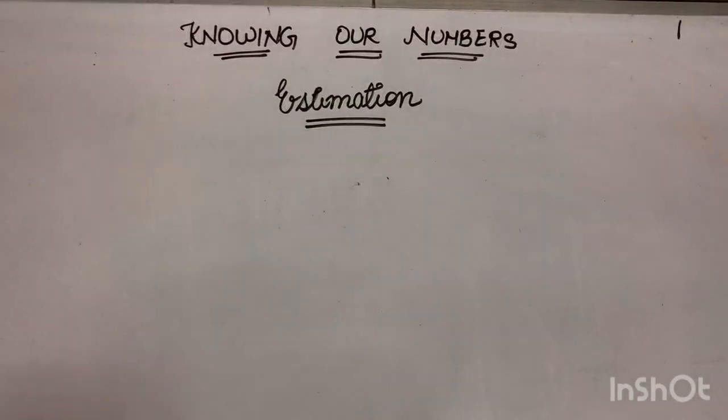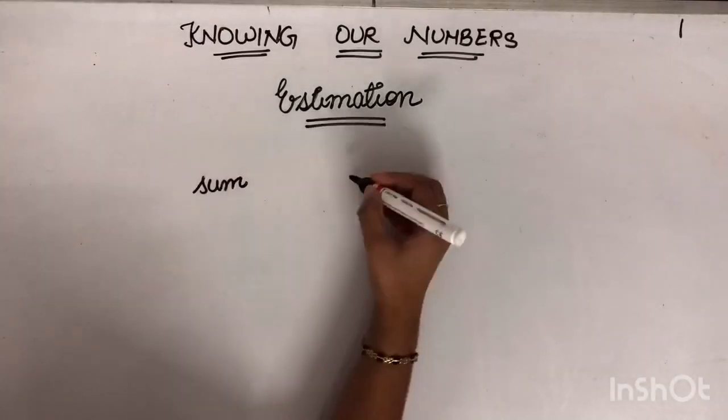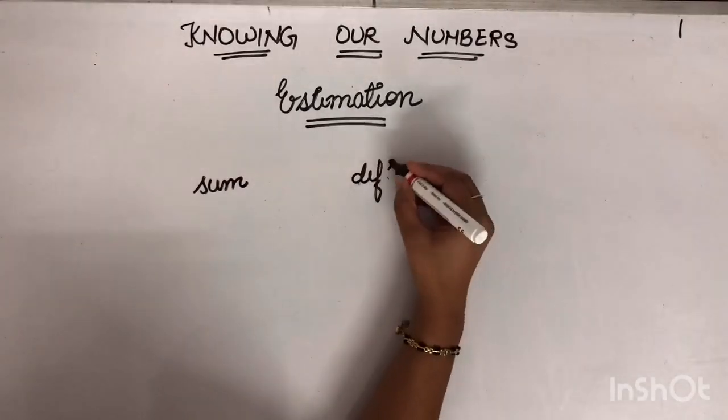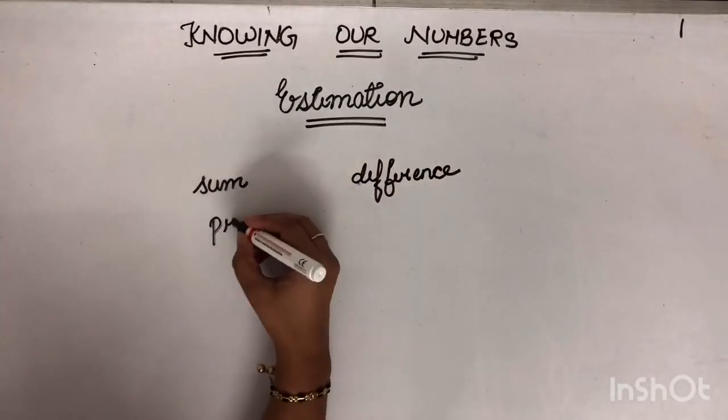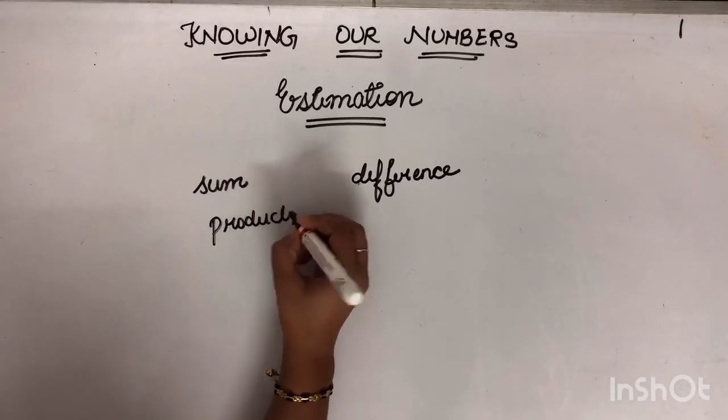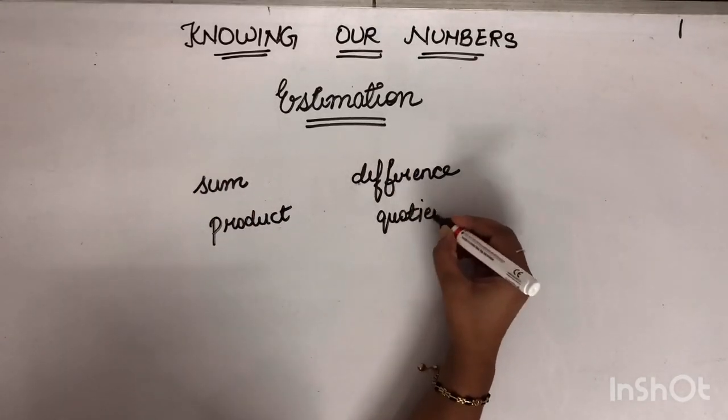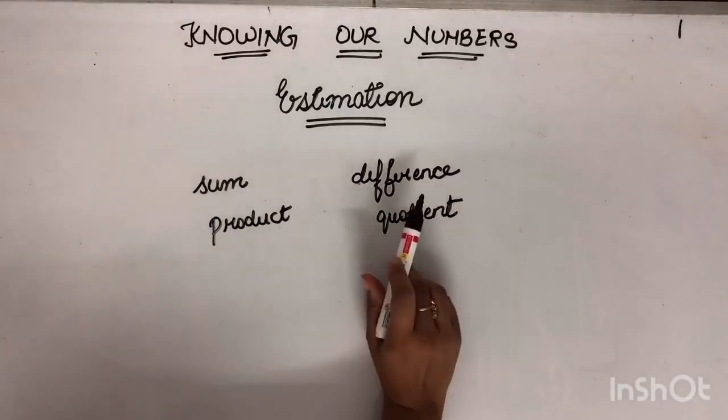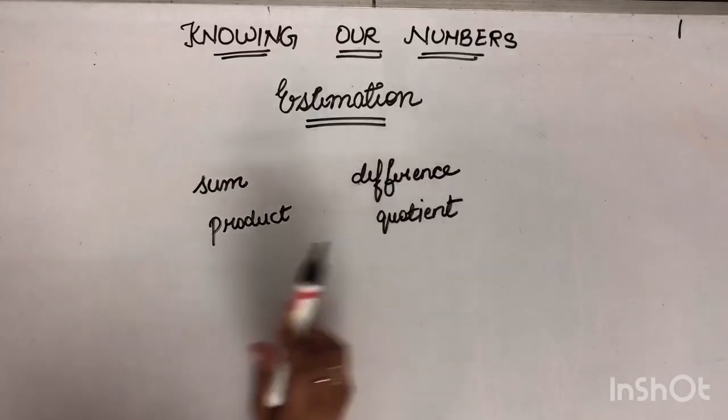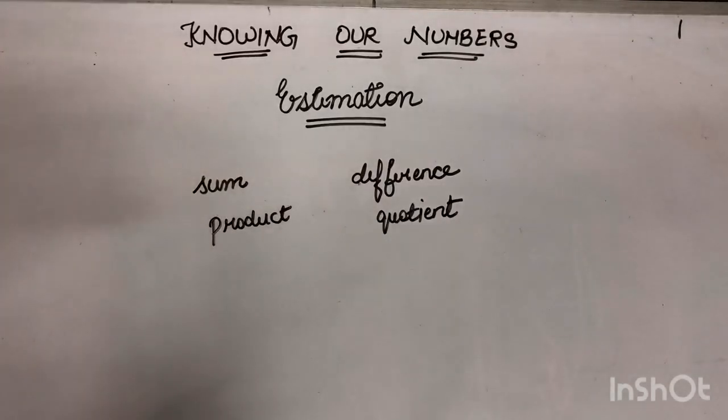Now next we have to estimate sum, difference, product or quotient. Sum is adding two numbers, difference is subtracting the numbers, product is multiplying the numbers and quotient is dividing the numbers.